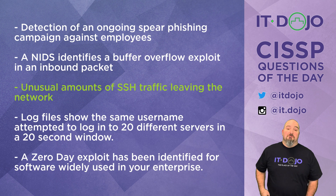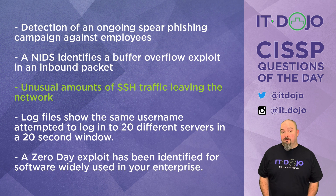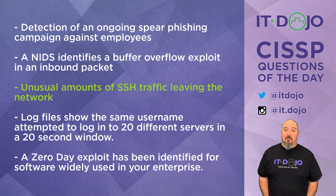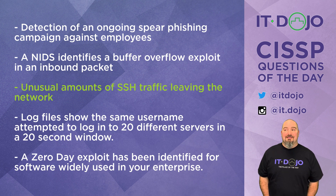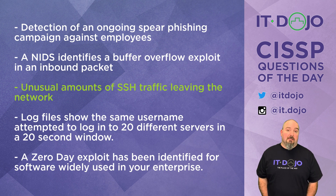That leaves us with the last choice, which says that a zero-day exploit has been identified for a piece of software commonly used in your enterprise. Is that an indication of attack? No. Is it an indication of compromise? No. But it very much falls into the category of a prelude to an attack, because now that you know this thing is out there and you are not currently protected against it, the likelihood that something could be coming is real. You may want to step up your efforts to look for indications of attack or compromise, and also see if there are any mitigating steps you could take to reduce the likelihood of an attack leading to a compromise.